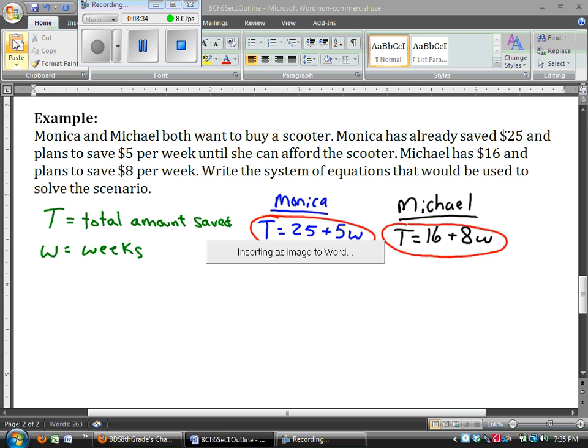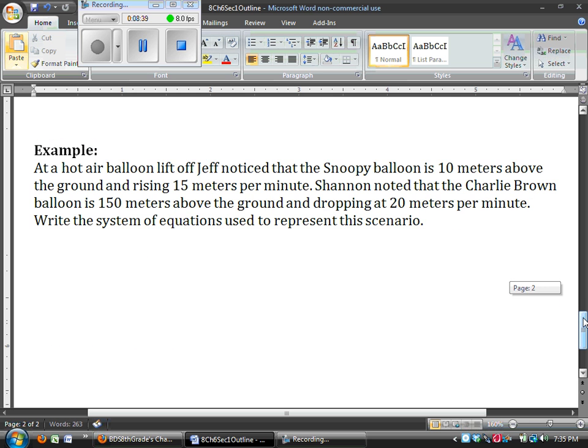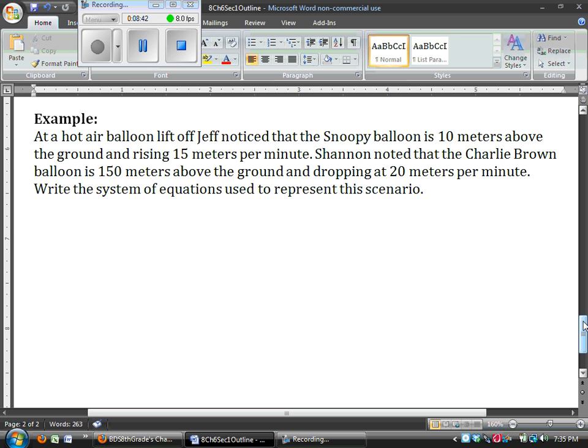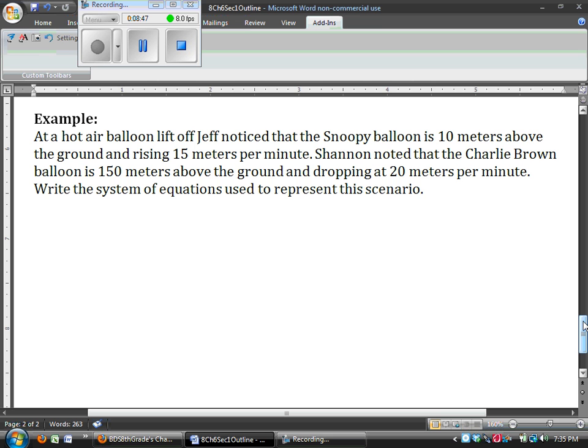So let's take a look at one more. We're going to be talking about some hot air balloons. At a hot air balloon liftoff, Jeff noticed that the Snoopy balloon is 10 meters above the ground and is rising 15 meters per minute. Shannon noted that the Charlie Brown balloon is 150 meters above the ground and dropping at 20 meters per minute. Write the system of equations used to represent this scenario. So again, let's define the variable. The two variables that I need to know are D is the distance that the balloon is from the ground.